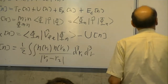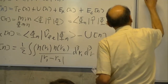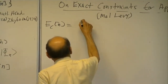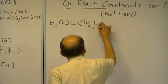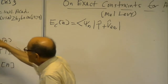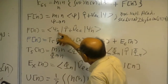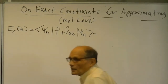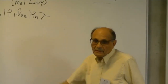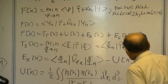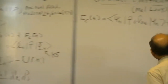The correlation energy Ec[n] equals psi_n acting with T plus Vee, the full T plus Vee, evaluated with psi_n—the wave function minimizing T plus Vee—minus the same thing evaluated with phi_n, the Kohn-Sham wave function. We need two more components: the kinetic contribution to the correlation energy, which Karen talked about today.